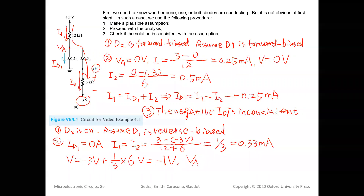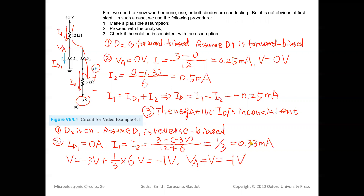VA equals V because D2 is a short circuit, so VA = −1 V. Now let's double-check: we assumed D1 is reverse biased. VA = −1 V is less than the 0 V ground on the other terminal of D1. So VA < 0, which is consistent with D1 being reverse biased. The result is consistent with our assumption.